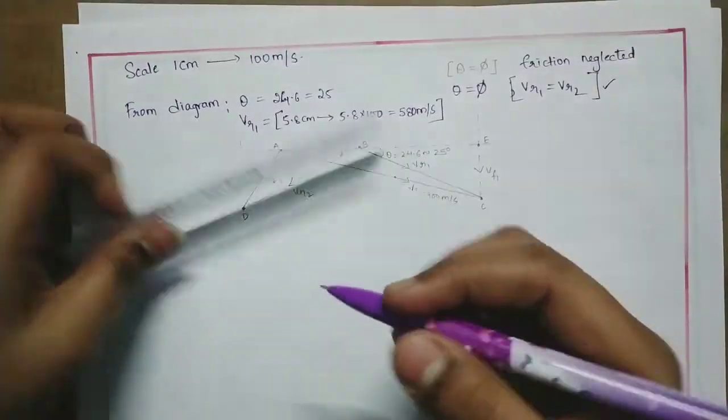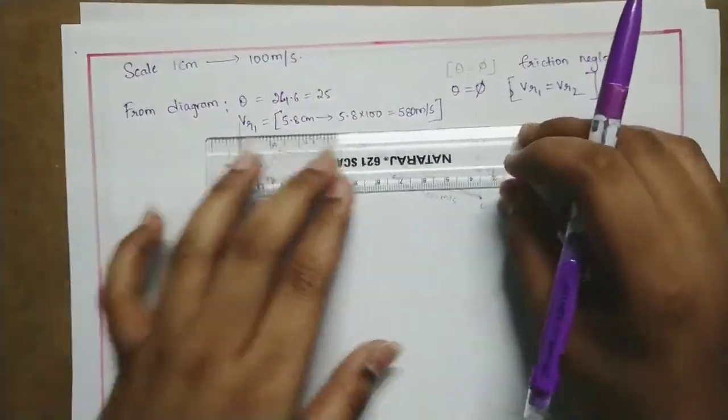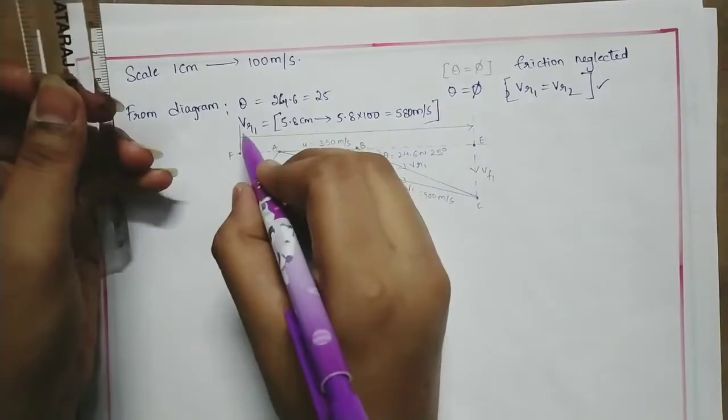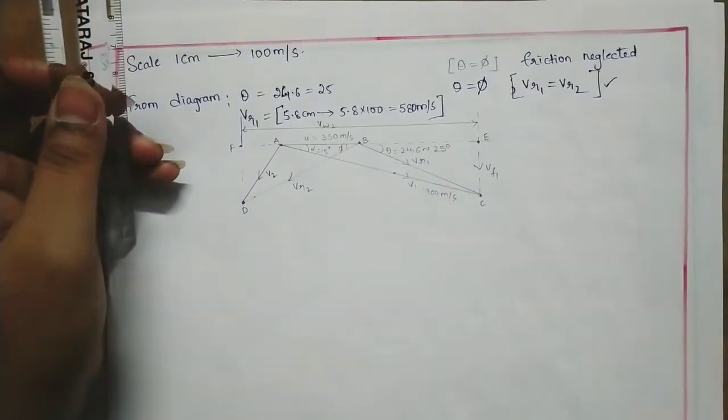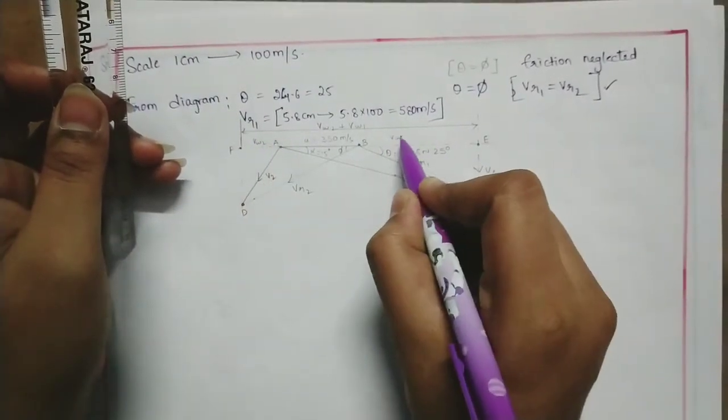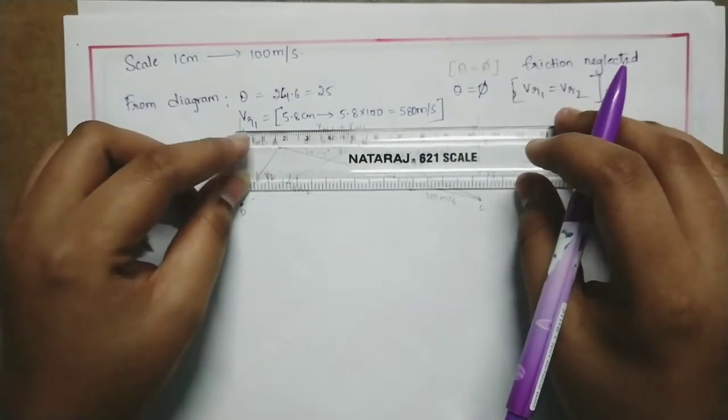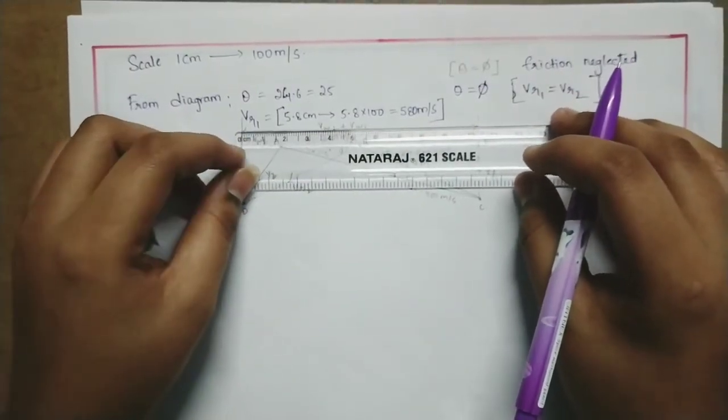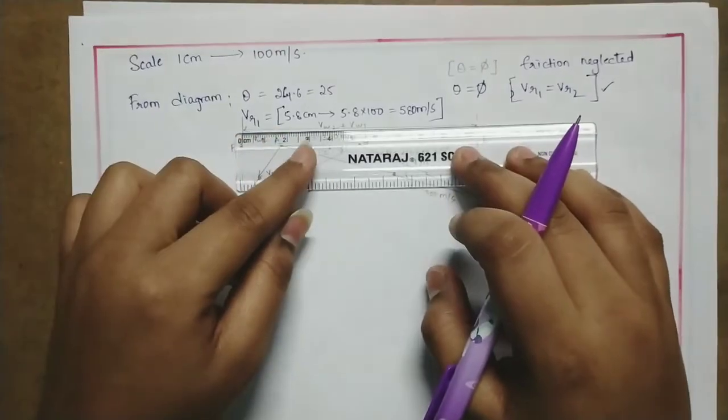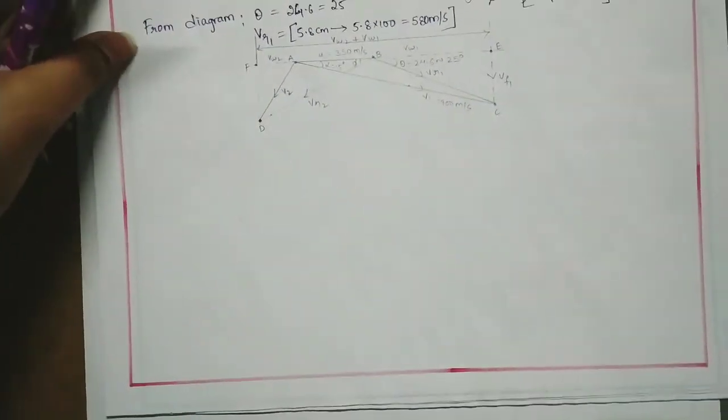Connect point A and D to get exit velocity of steam V2. Now we have point F. Measure the total length to get Vw1 plus Vw2. I got 10.4 centimeters from the diagram. So Vw1 plus Vw2 is 10.4.